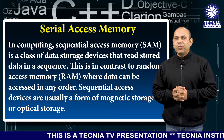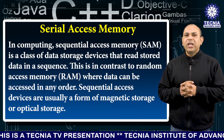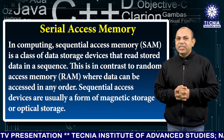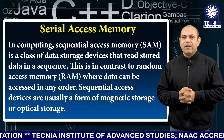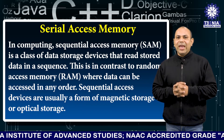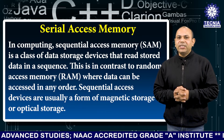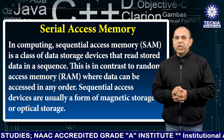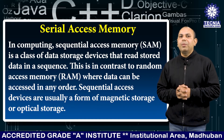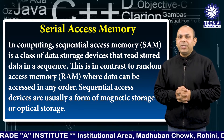In computing, a sequential access memory is a class of data storage devices that reads stored data in a sequence. This is in contrast to random access memory, where RAM can be accessed in any order. Sequential access devices are usually a form of magnetic storage or optical storage.